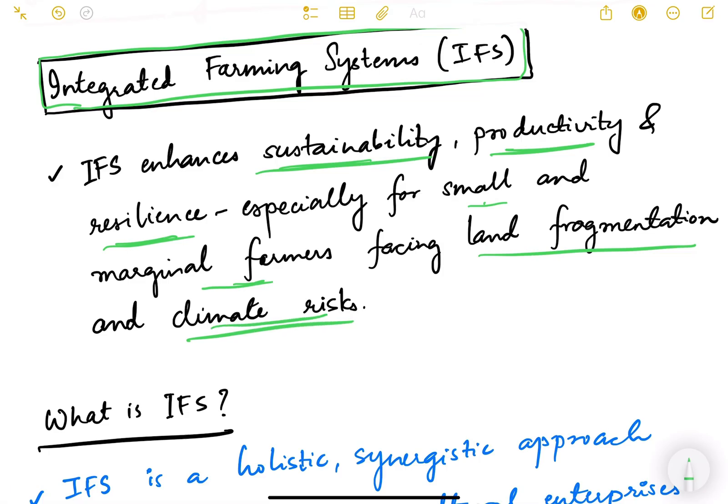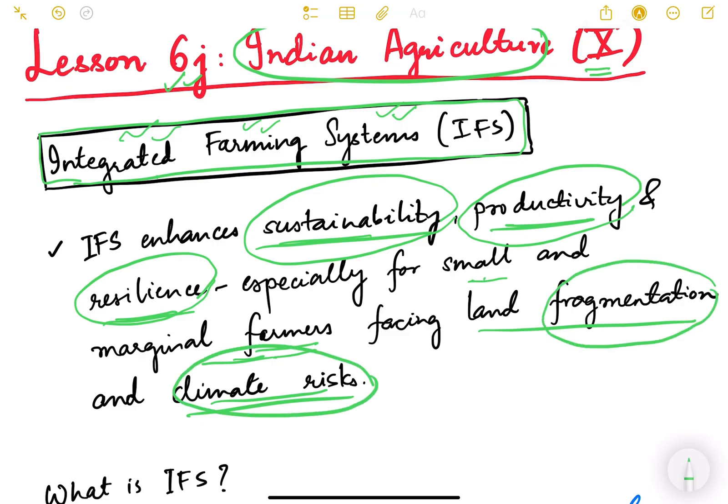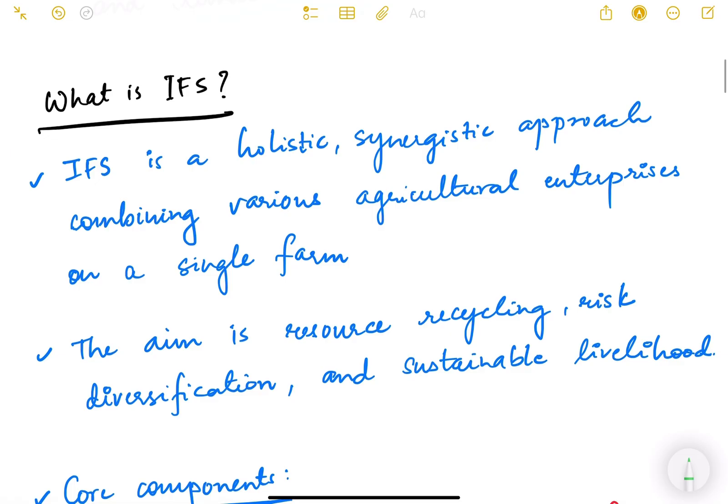We have to understand what is the importance of integrated farming systems. Obviously we will learn what is IFS, what is integrated farming systems. But to introduce you, let me first tell you that it is a system by which we can increase sustainability, productivity, and resilience, especially for small and marginal farmers who are having small patches of land because of land fragmentation and climate risks.